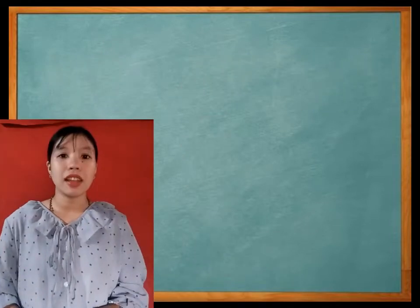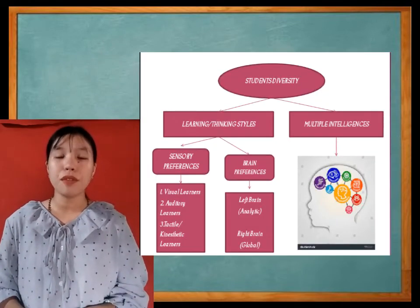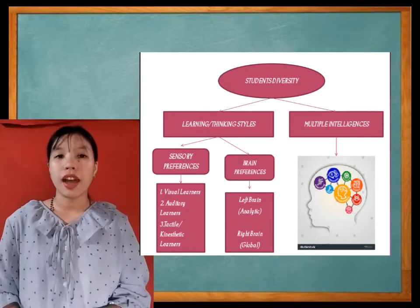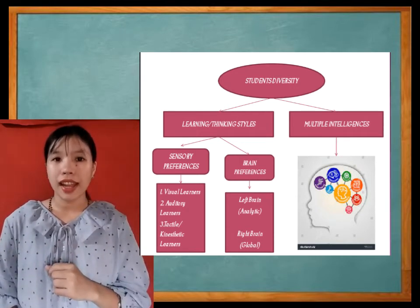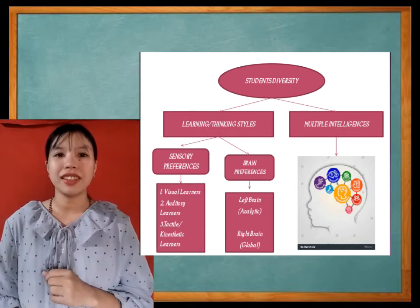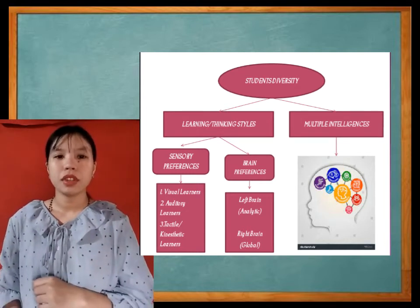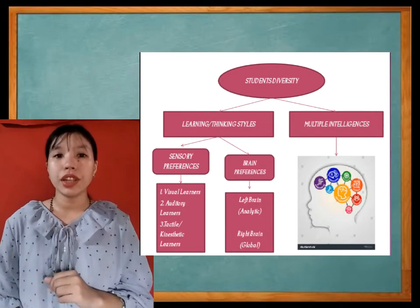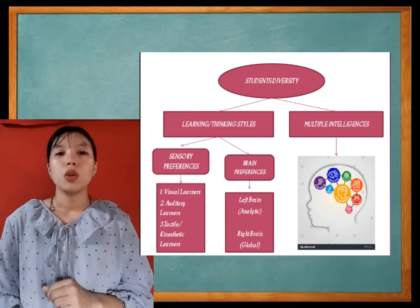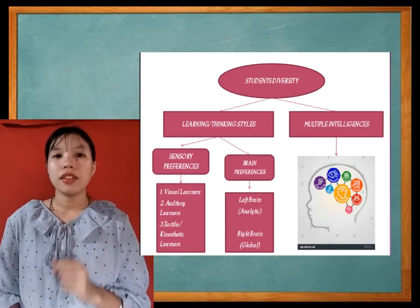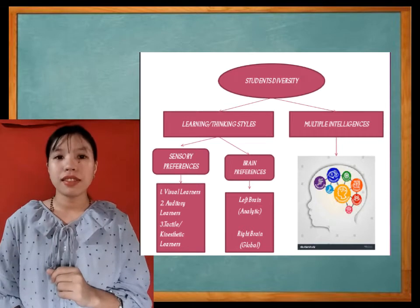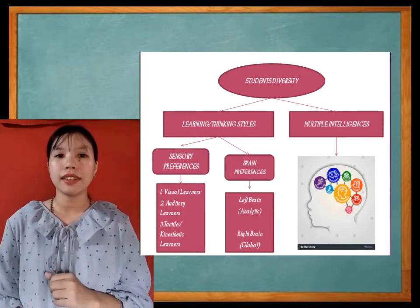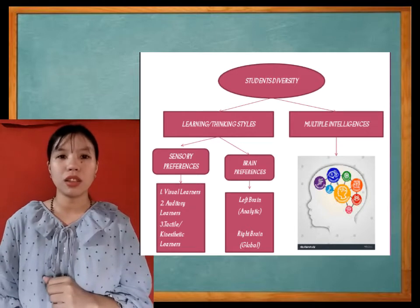You can see in the diagram, the student's diversity has two functions, which are the learning or thinking style and the multiple intelligences. There are two perspectives about learning or thinking styles, which are the sensory preferences and brain preferences, also known as the global analytic continuum.